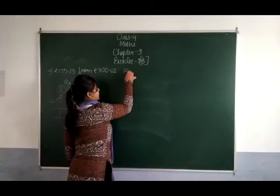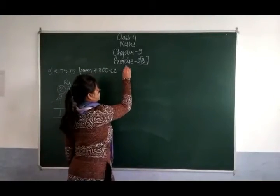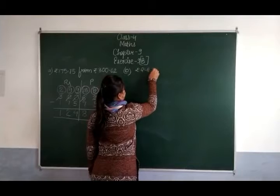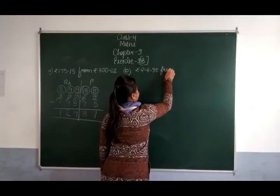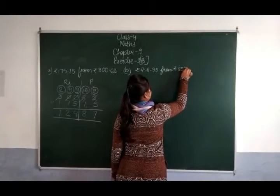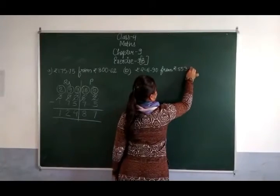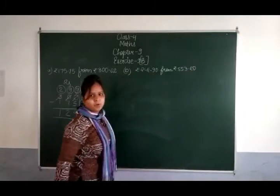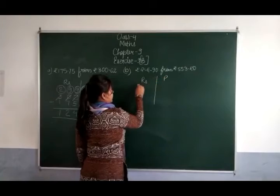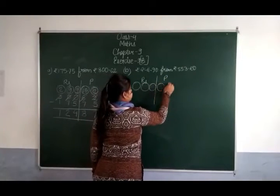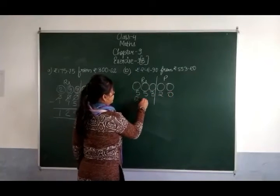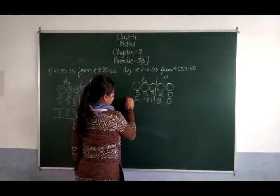B वाला देखिए: 241 rupees 90 paise को 553 rupees 20 paise में से subtract करना है। Rupees लिखेंगे, paise लिखेंगे: 553 rupees 20 paise, minus 241 rupees 90 paise subtract करेंगे।